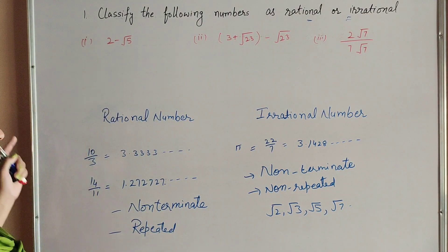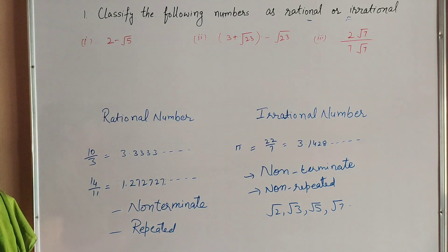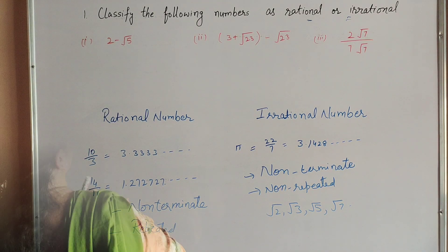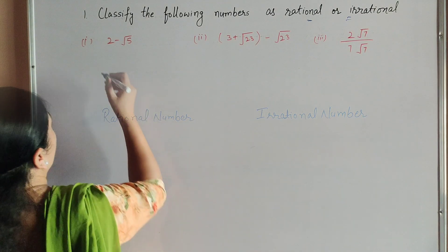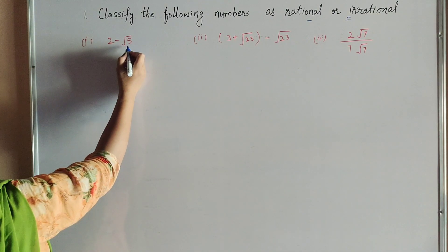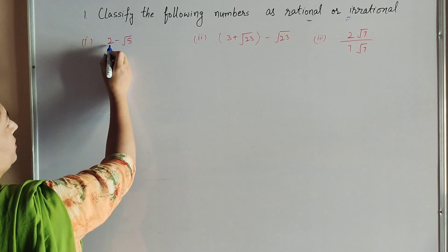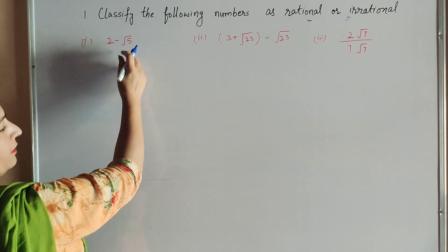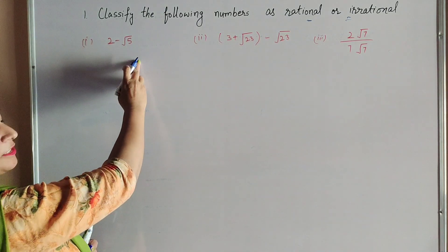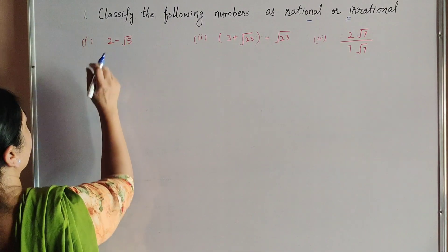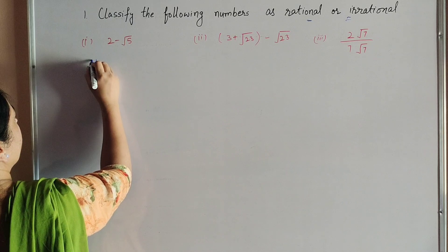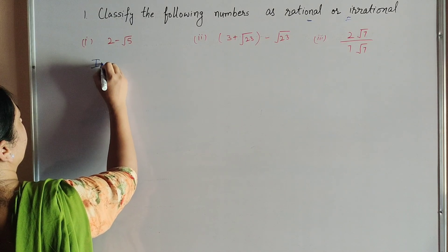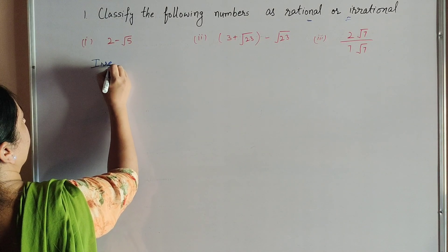Now we move to the questions. The first part is 2 minus square root 5. In this, 2 is a rational number and square root 5 is an irrational number. So the given number is an irrational number.